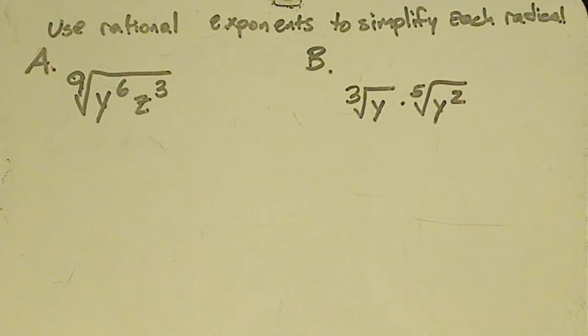I have the ninth root of y raised to the sixth z raised to the third power. And then the second problem is the cube root of y times the fifth root of y squared. You're to simplify each radical expression using rational exponents. So pause the video and see if you can try to do both of these on your own.